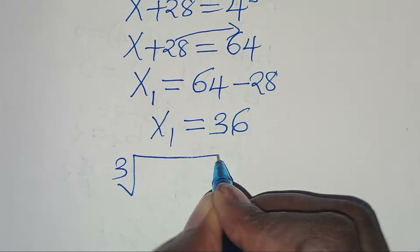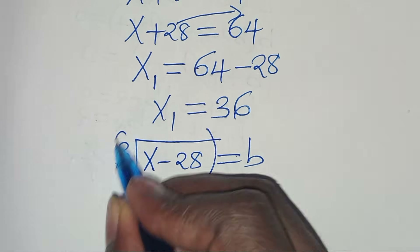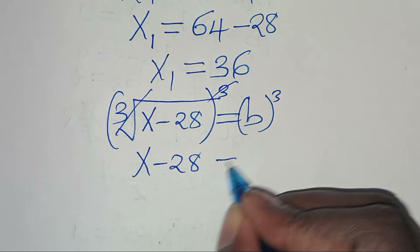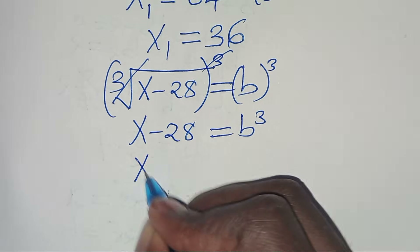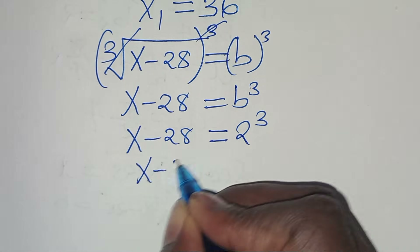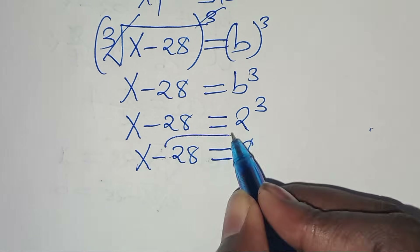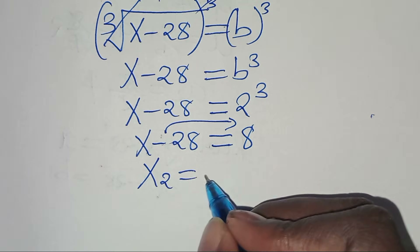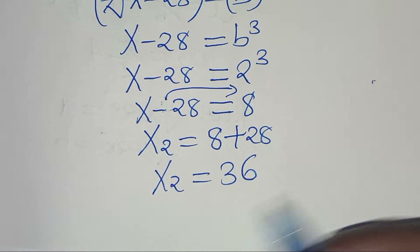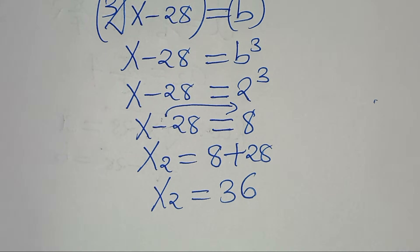From the cube root of x minus 28 equals b, cubing both sides gives x minus 28 equals b cubed. Since b equals 2, x minus 28 equals 8. Adding 28 to both sides, x2 equals 8 plus 28, which also equals 36.